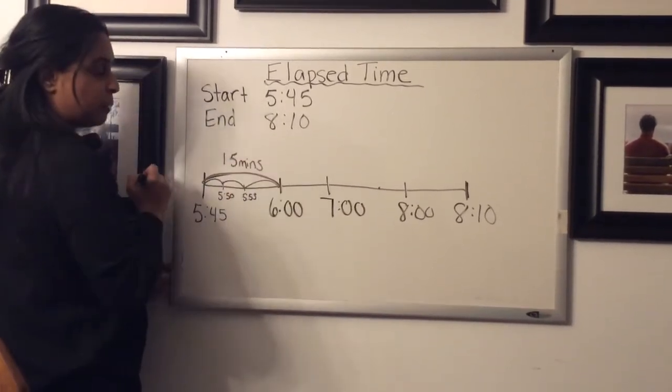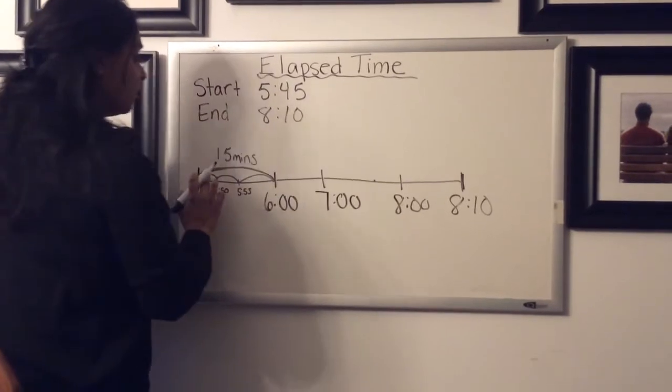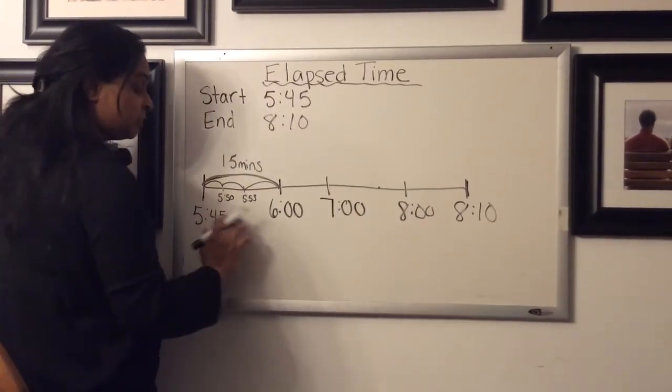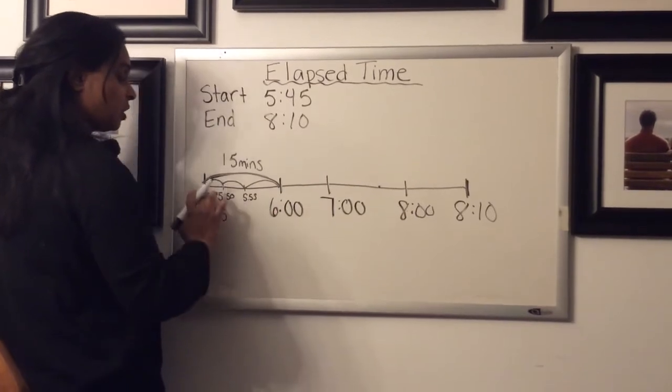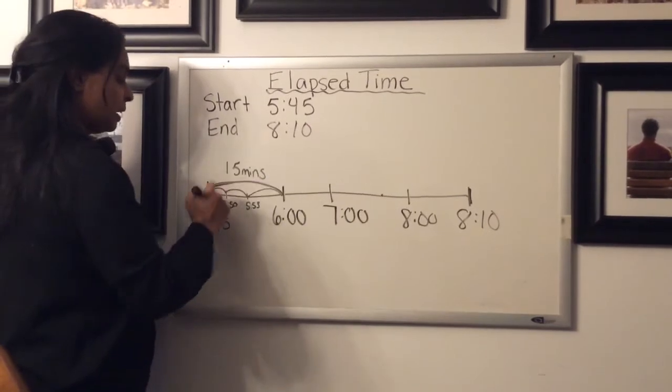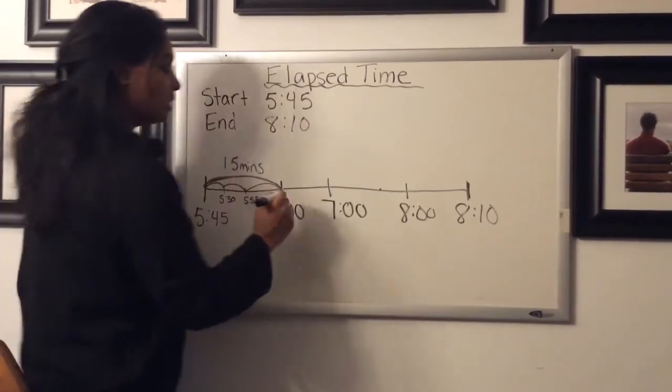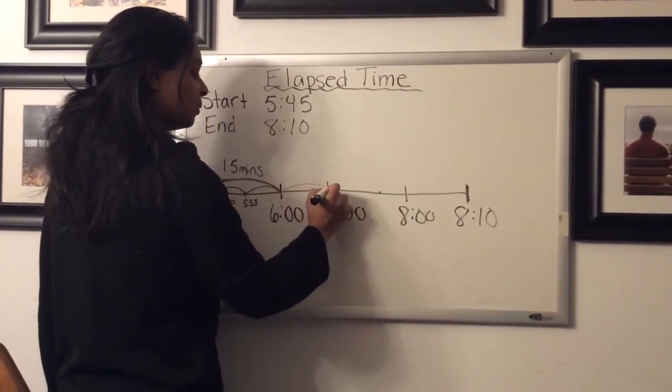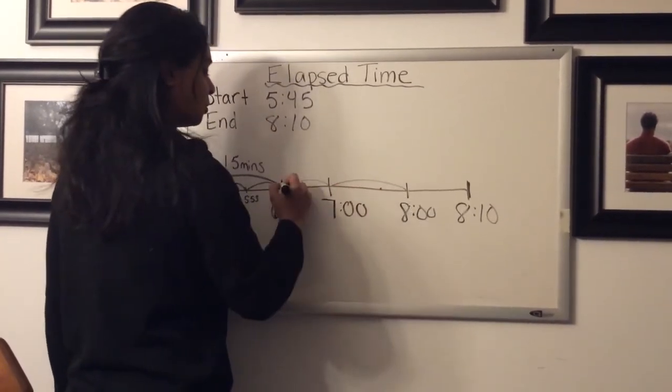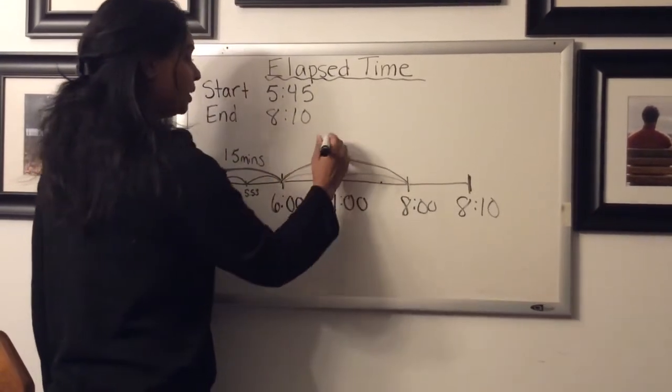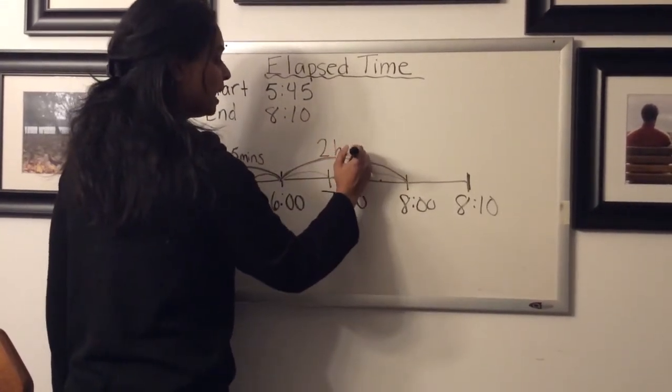And you can just use M-I-N-S for minutes. So if you weren't sure that it was 5:45, that was 15 minutes from 5:45 to six o'clock, then just count up by fives to help you get that number. So 15 minutes from 5:45 to six o'clock. Then we want to count up our hours. So we know this is one hour, two hours. So all together here in this jump, we have two hours.